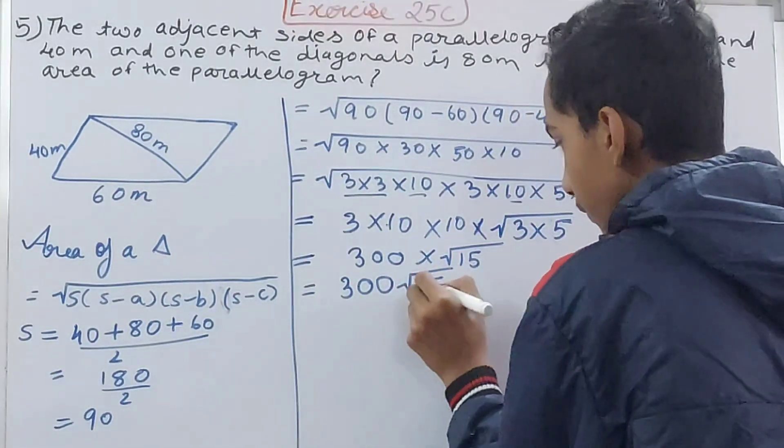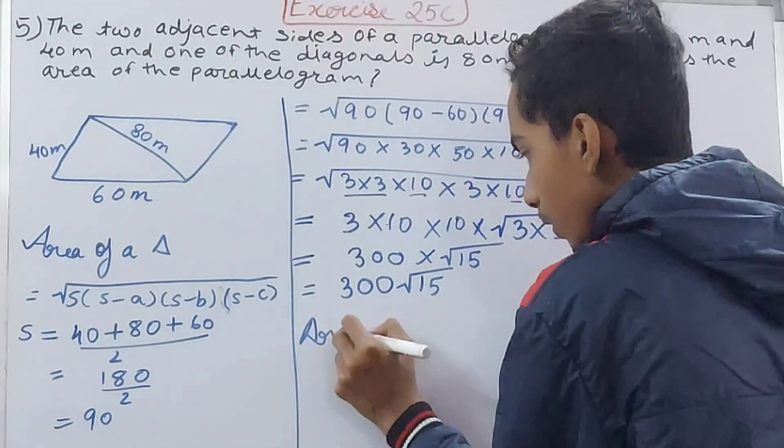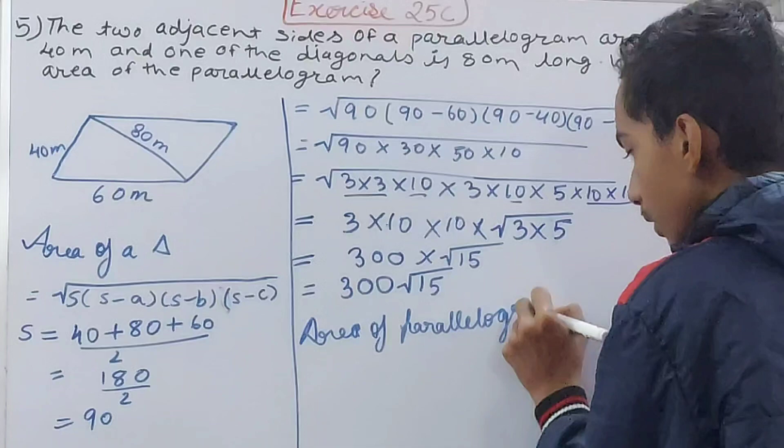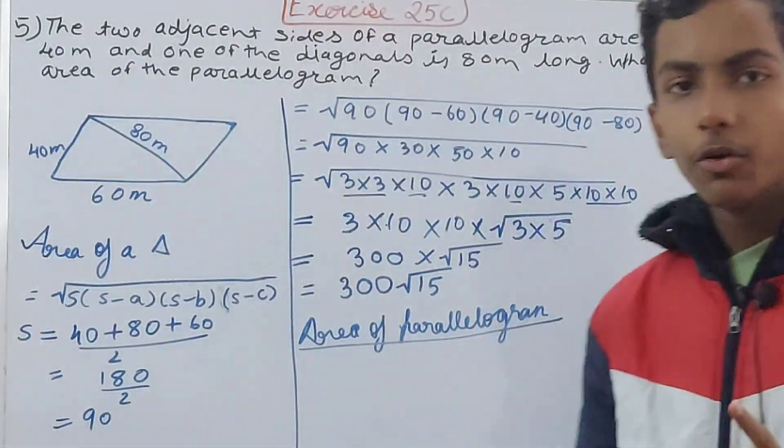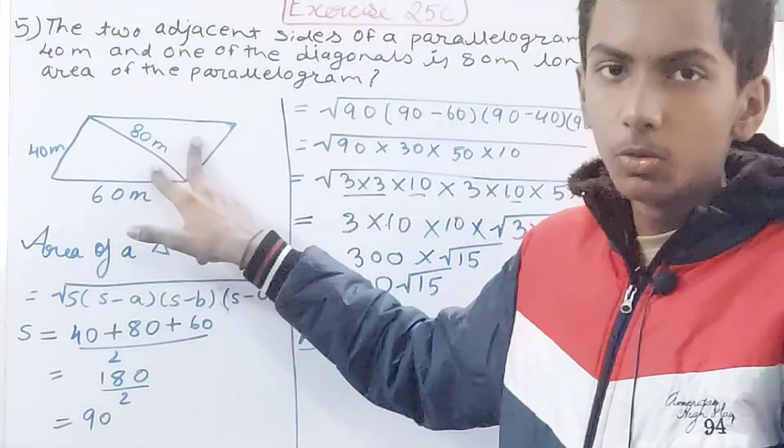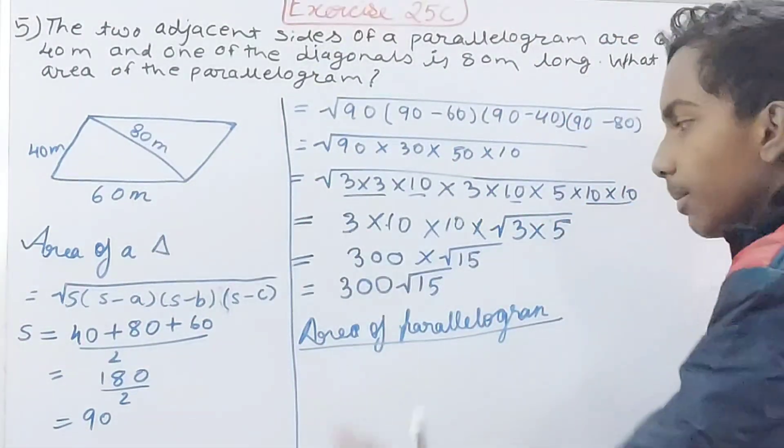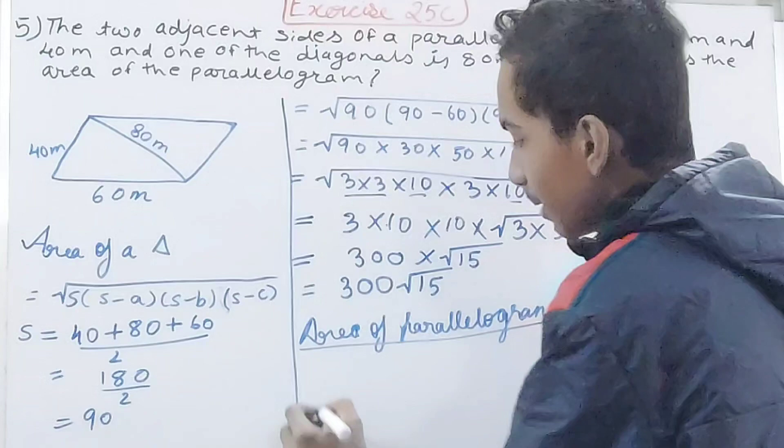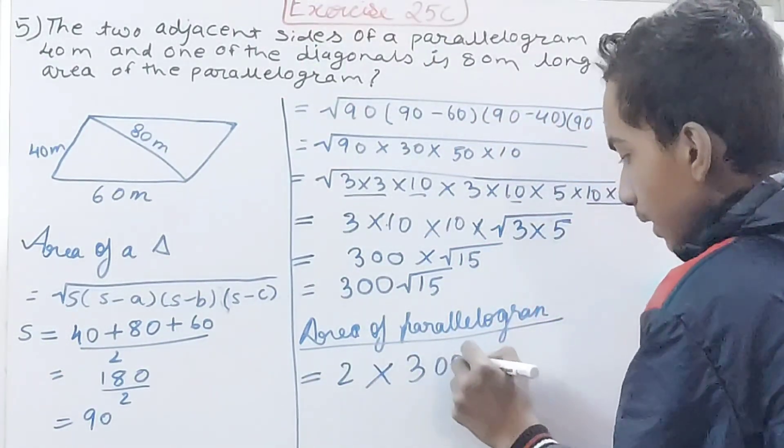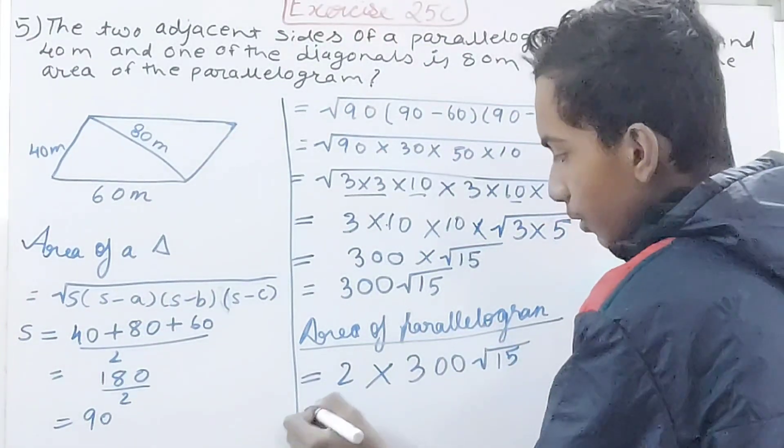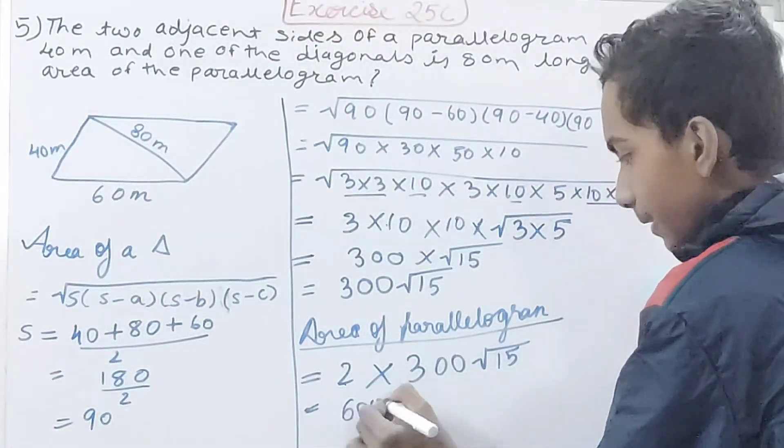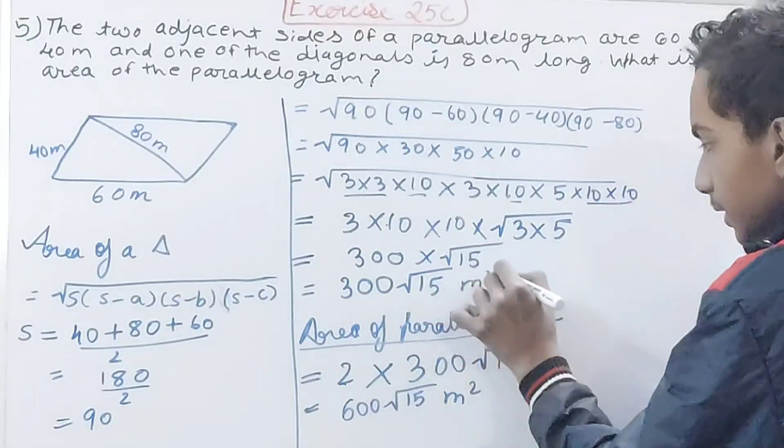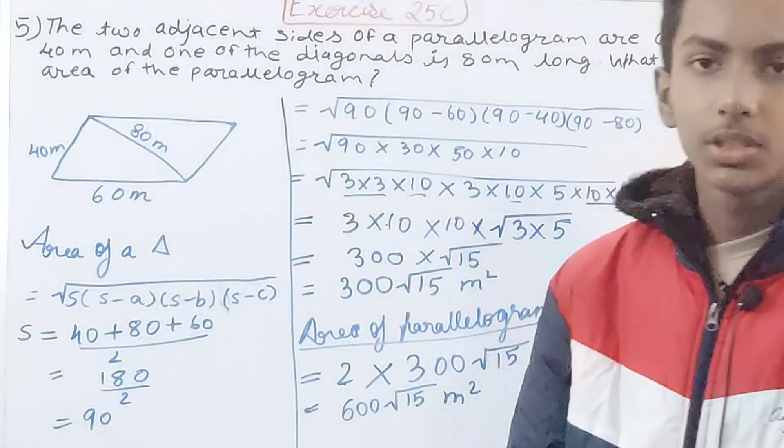Area of the parallelogram - the entire parallelogram has been divided into two congruent triangles. I can multiply this area by 2, so 2 × 300√15. I will multiply 2 × 300 = 600√15 and put the unit also - square meters. So 600√15 square meters is the area of the parallelogram.